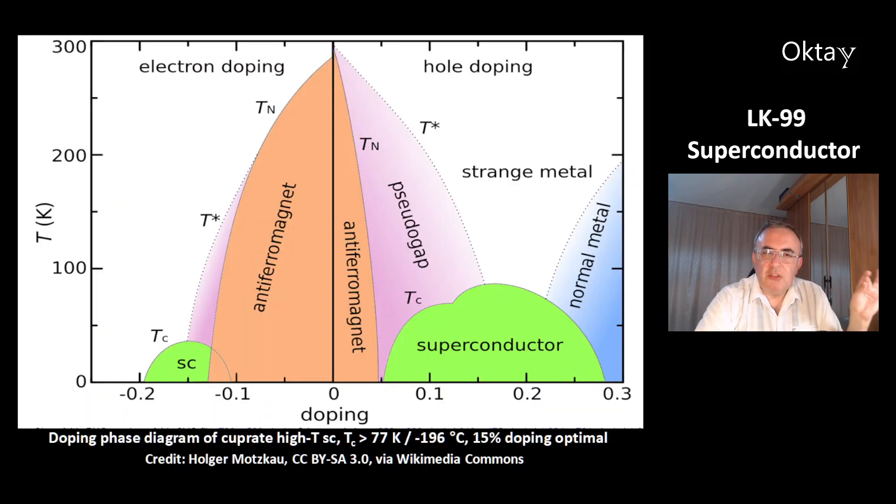This is a doping phase diagram of cuprates, high-temperature superconductors. High-temperature superconductors have a critical temperature above boiling point of liquid nitrogen at 77 Kelvin or minus 196 degrees Celsius.